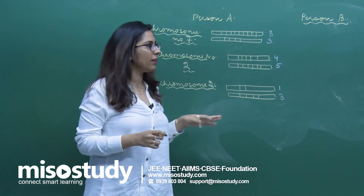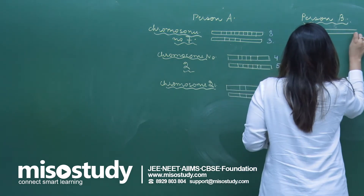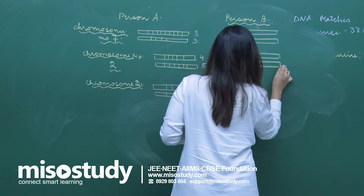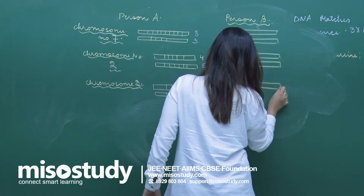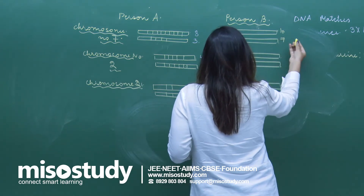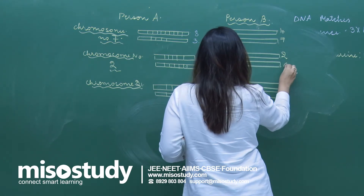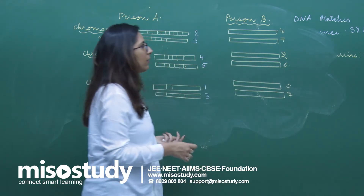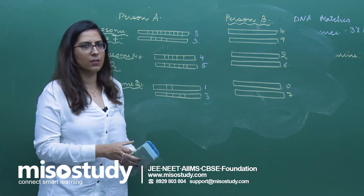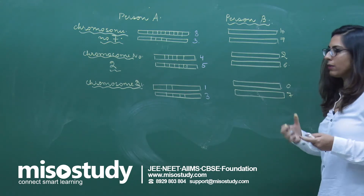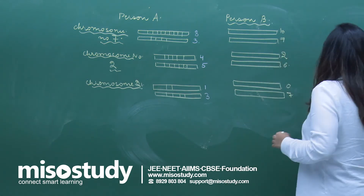Now let's talk about person B. Taking the same chromosomes — number 7, 2, and 21. For chromosome 7, suppose there are 10 and 7. For chromosome 2, suppose there are 2 and 6. For chromosome 21, no repeated sequences and 7. I'm just taking random examples here.